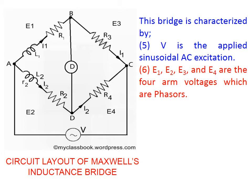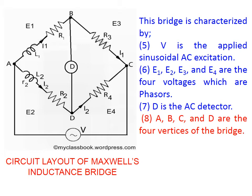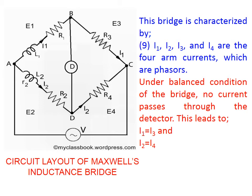D is the alternating current detector which can detect very small values of AC voltages or AC currents. A, B, C, and D are the four vertices of the bridge. I1, I2, I3, and I4 are the four arm currents, which are phasors. Under the balanced operating condition of the bridge, no current passes through the detector. This leads to I1 equal to I3 and I2 equal to I4.